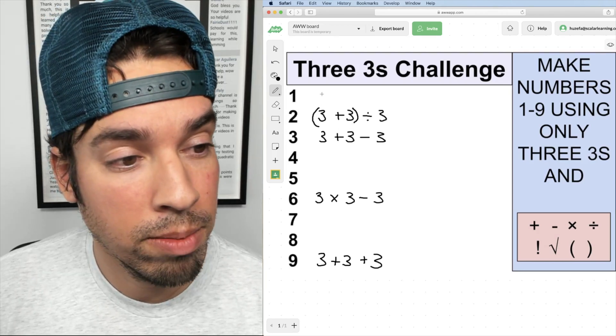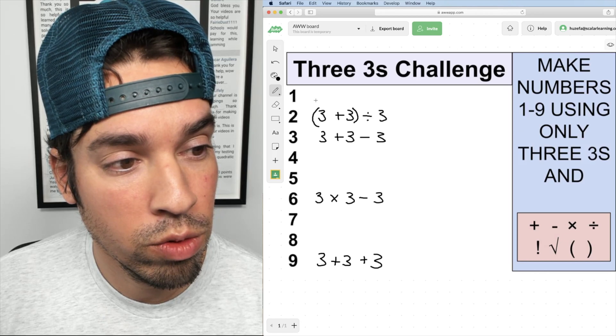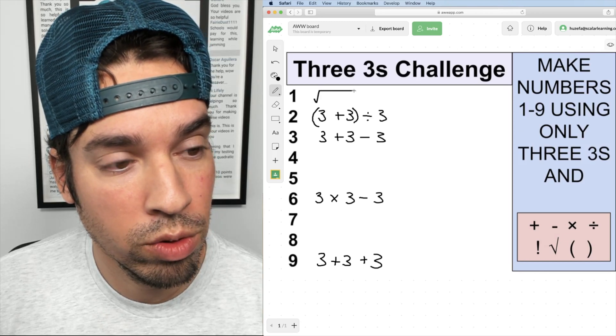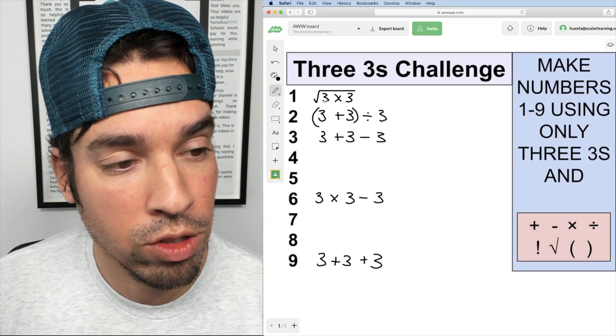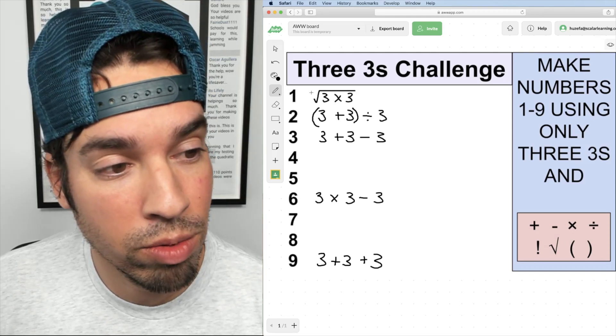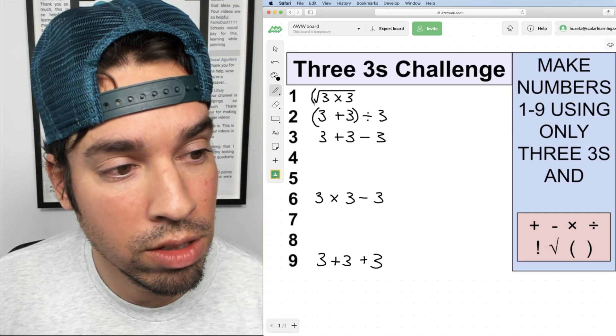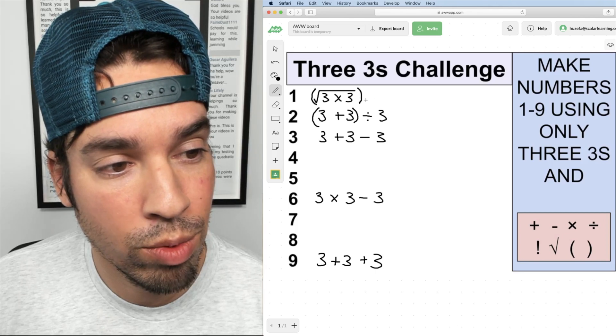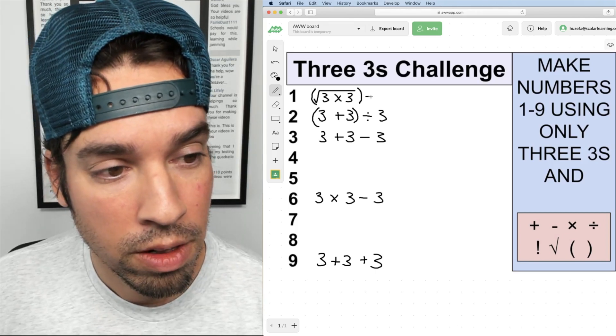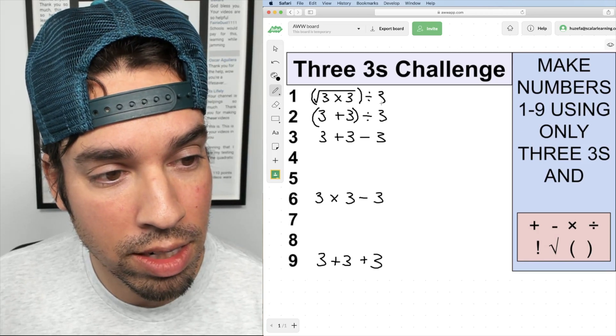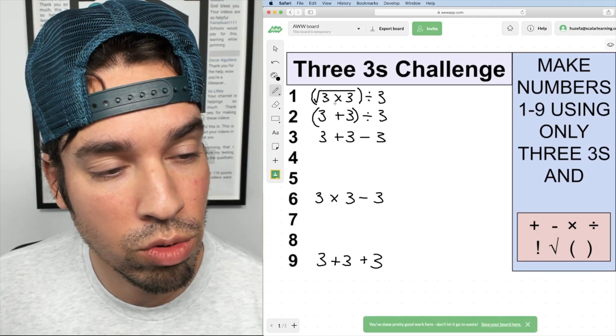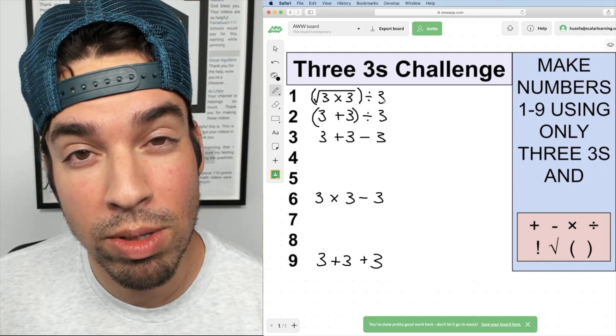Next I'm going to do one and I'm going to first use my square root operator. So I'm going to say square root of three times three. Three times three is nine, square root of that is three. Then I'm going to take that square root and divide that answer by three. So that is three times three which is nine, square root of that is three, divided by three is one.